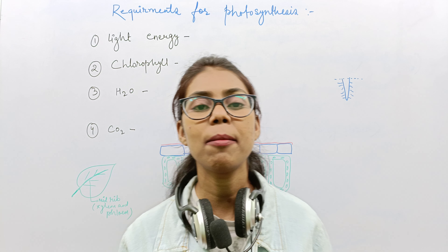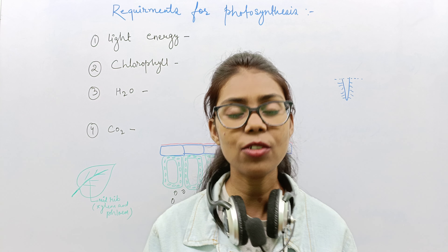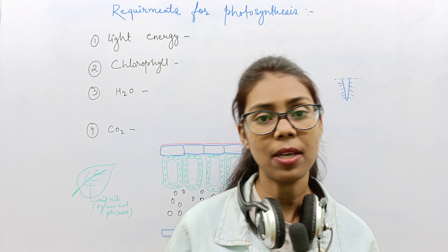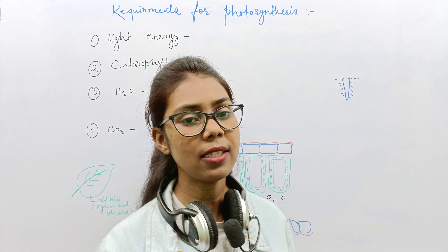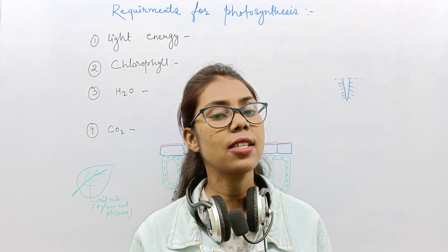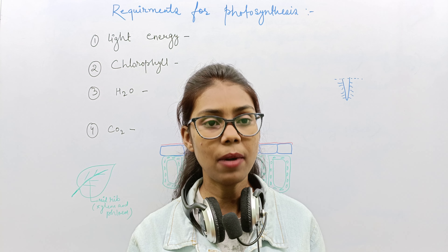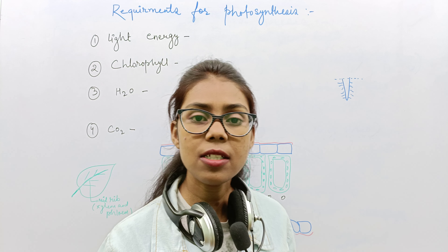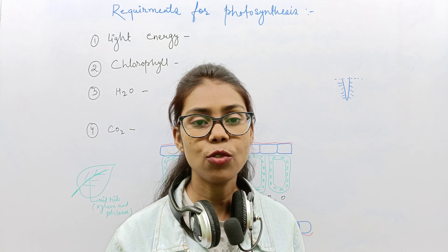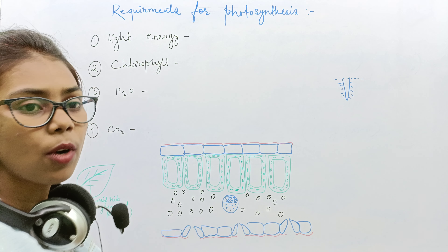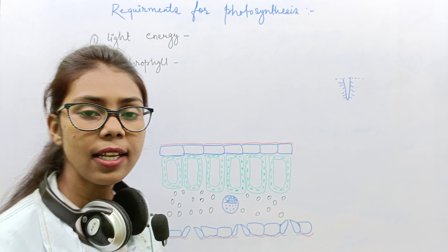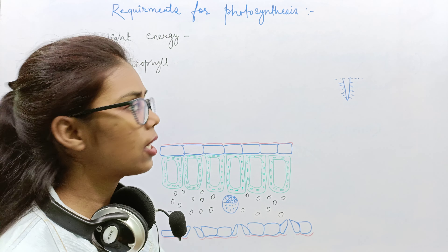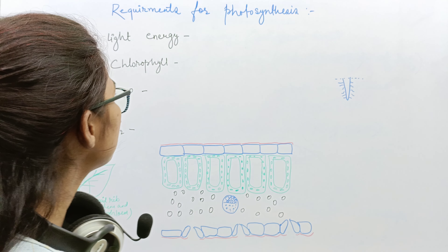Today we are going to talk about the requirements of photosynthesis. In the previous video, we talked about what photosynthesis is and why plants do photosynthesis — it is a process to make their own food with the help of inorganic substances. In this video, we will see the requirements for this whole process.